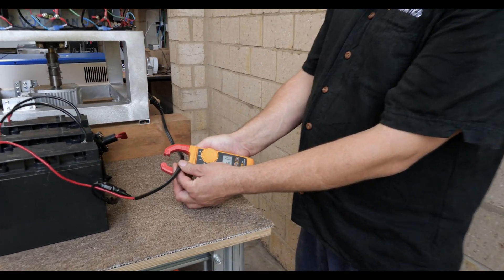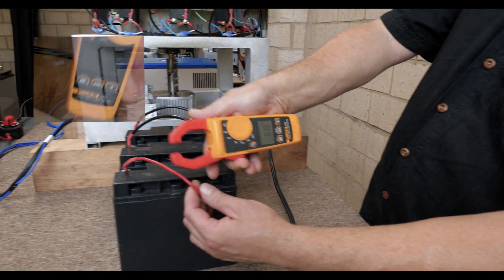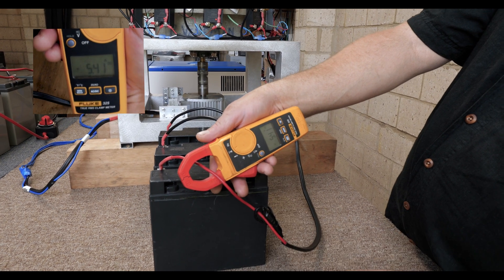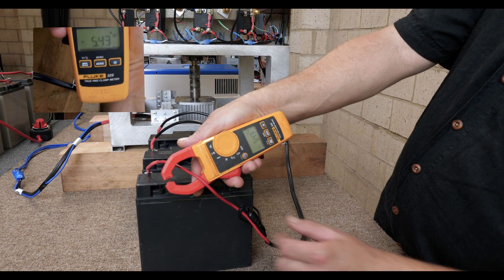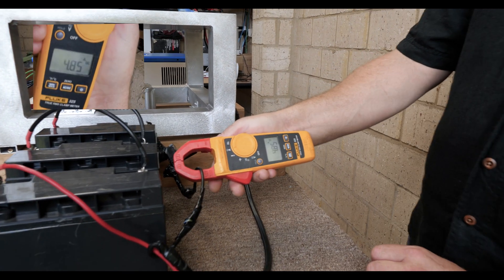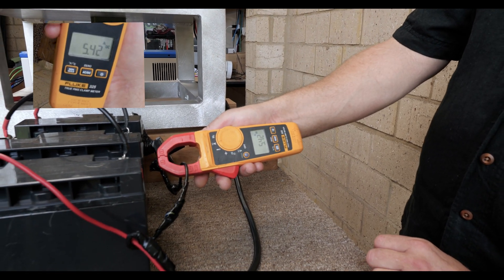When Ricky connects an amp meter to the positive, the reading shows the system is cycling 5.43 amps. Then, when Ricky connects the amp meter to the negative, the meter shows that the system is returning 5.43 amps into the battery bank.